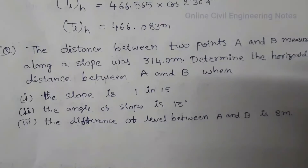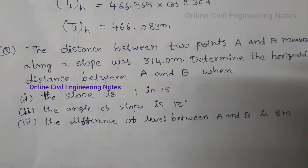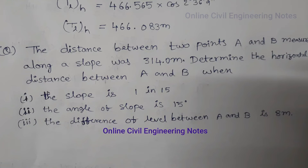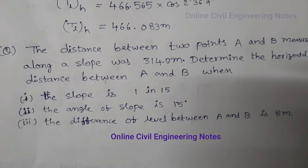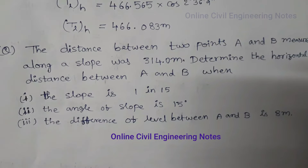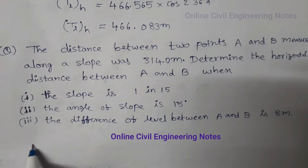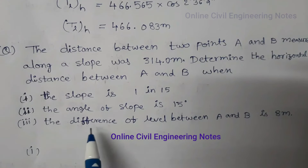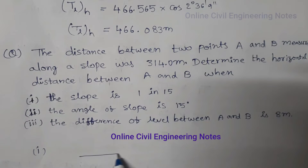The distance between two points A and B measured along a slope was 314 meters. Determine the horizontal distance between A and B when: number one, the slope is 1 in 15; number two, the angle of slope is 15 degrees; number three, the difference of level between A and B is 8 meters. For the first question, when the slope is 1 in 15.